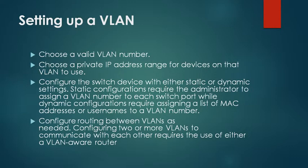Here are the steps to set up a VLAN. First, choose a valid VLAN number. Then choose a private IP address range for devices on that VLAN to use. Next, configure the switch devices with either static or dynamic settings. Static configurations require the administrator to assign a VLAN number to each switch port, while dynamic configurations require assigning a list of MAC addresses or usernames to a VLAN number. Finally, configure routing between VLANs as needed so that two or more VLANs can communicate with each other.